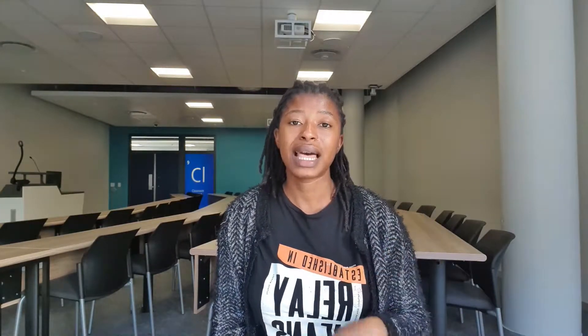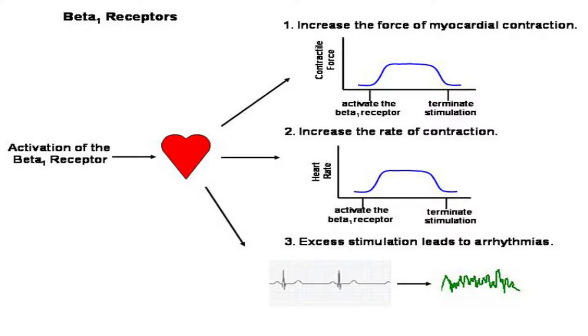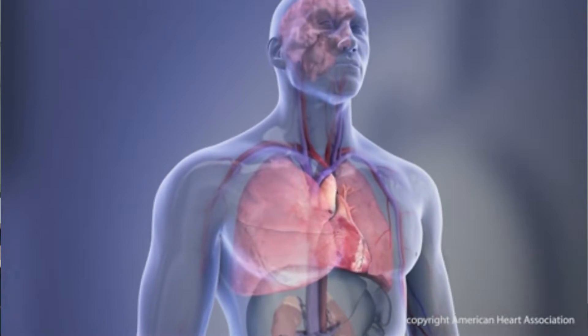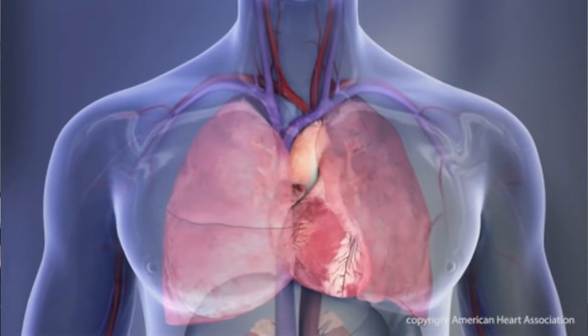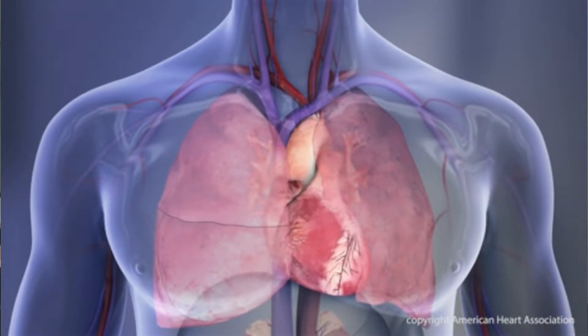For example, beta receptors allow you to increase the heart rate and contraction of the heart. If you give a patient a beta blocker, you know you're going to decrease the heart rate, decrease the contractility of the heart, and as a result decrease blood pressure. Sometimes the blood pressure can go so low it causes dizziness and nausea. If you can rationalize that, it becomes much easier to learn side effects from mechanism of action.